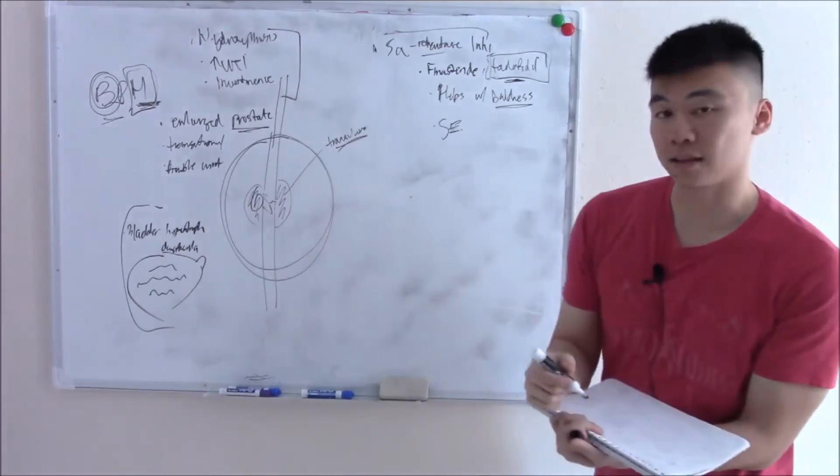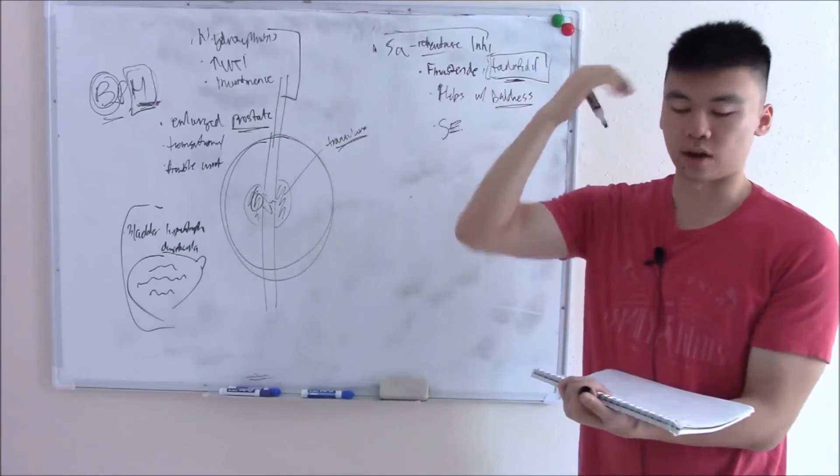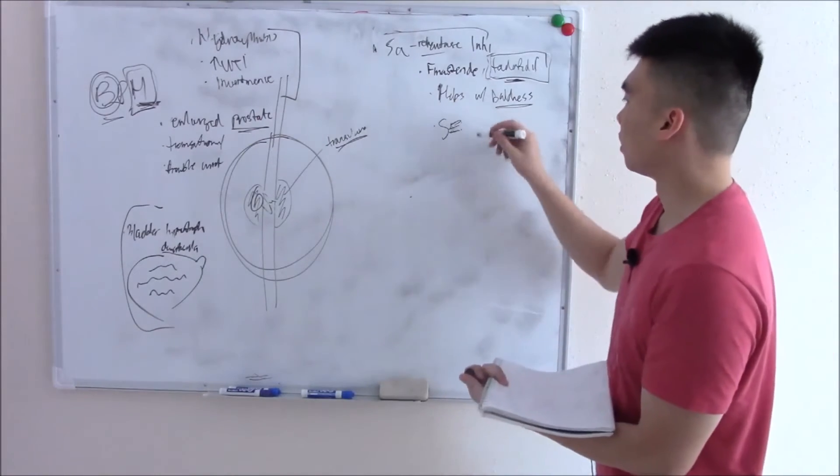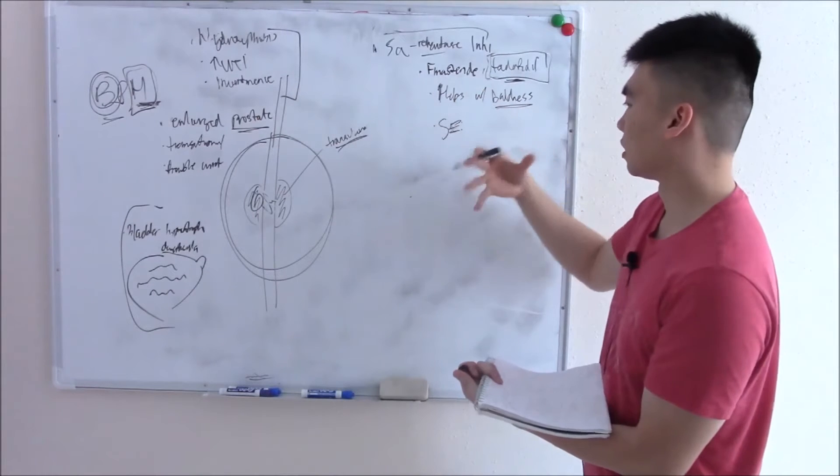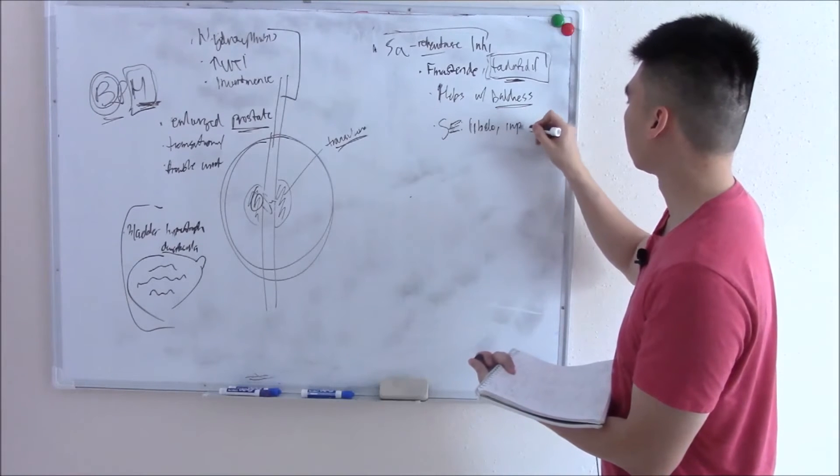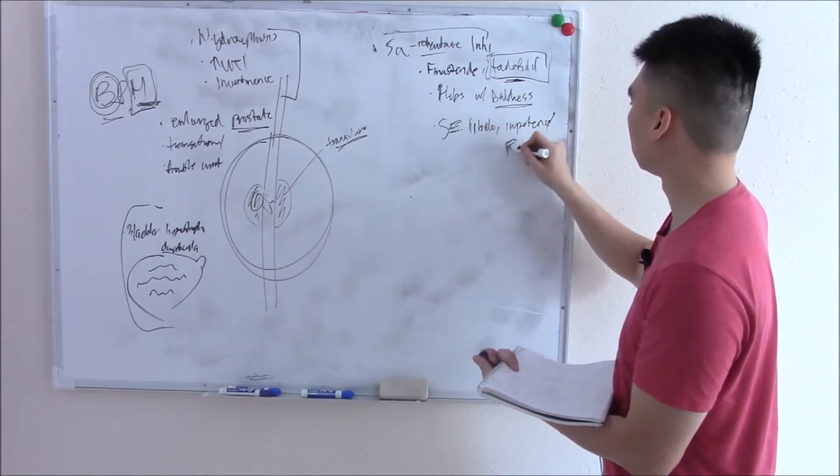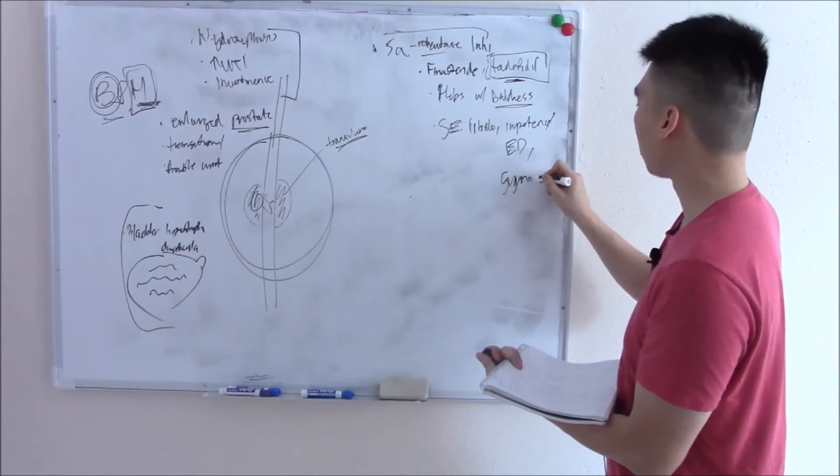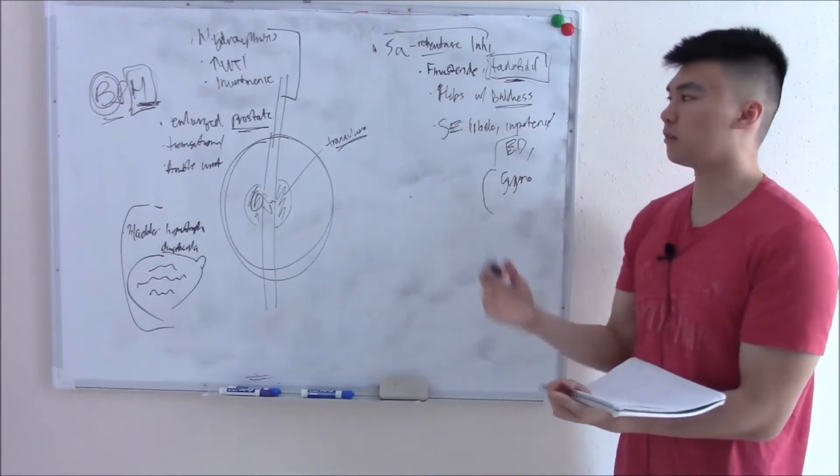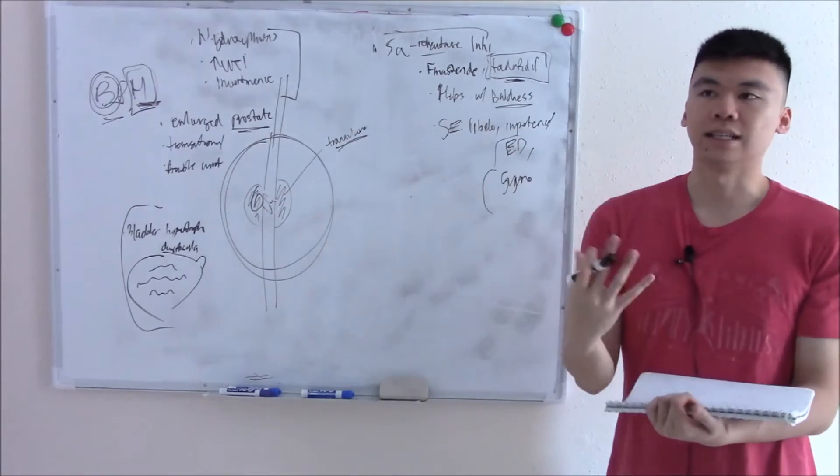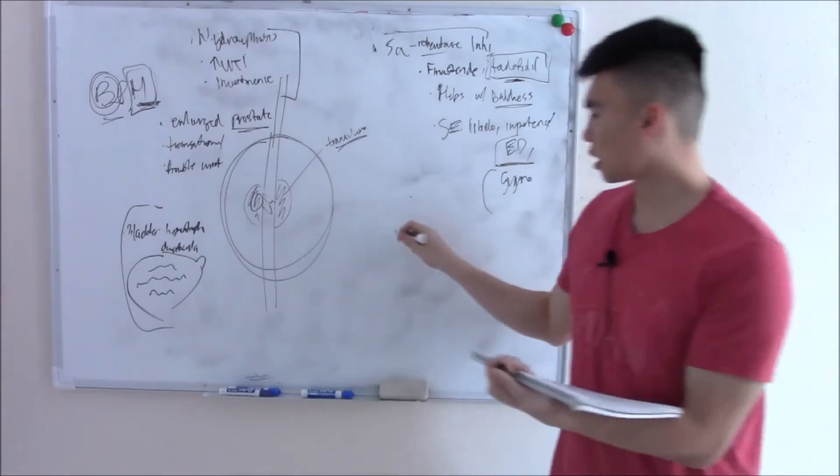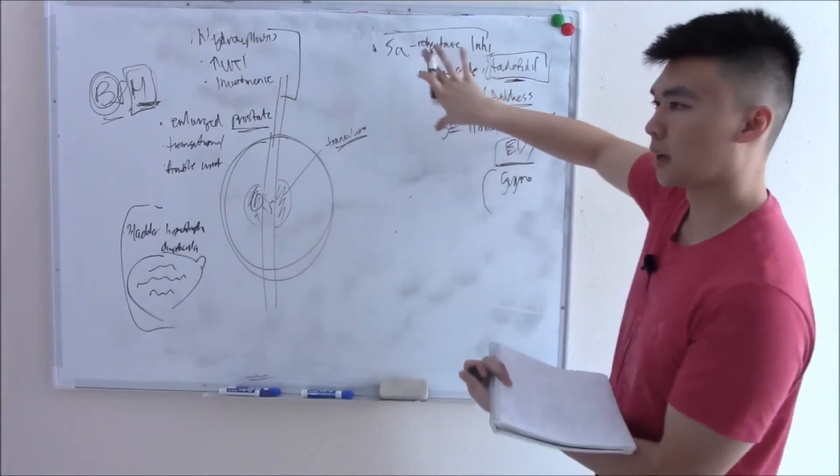For all the bad that DHT causes—BPH and male pattern baldness—it's still at its core an androgen, the most powerful androgen. When you block it, you'll have decreased signs: decreased libido, impotence (ED), and gynecomastia. Any drug that causes ED should be well known because they like to test it, and clinically these drugs have very poor compliance.